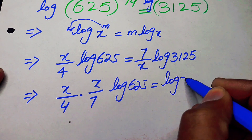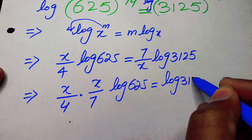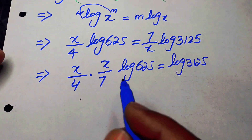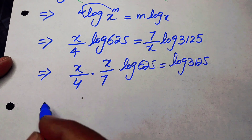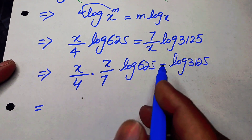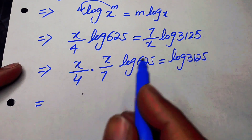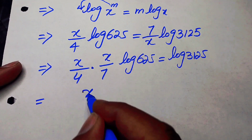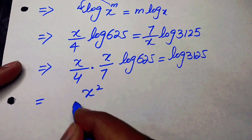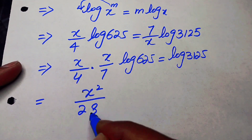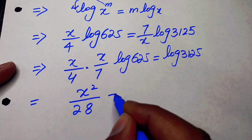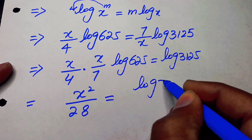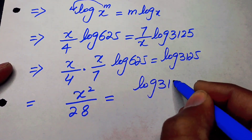We take log 625 to the right-hand side, and multiplying the two x terms together gives us x squared over 28 equals log 3125 over log 625.